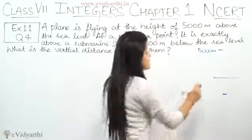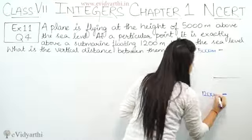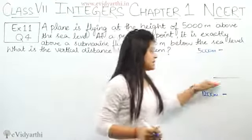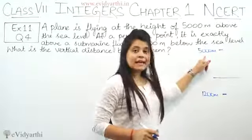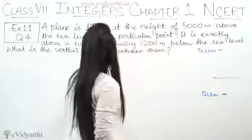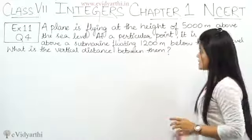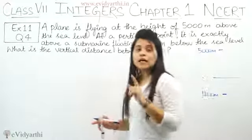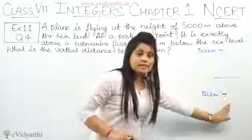And this distance from the sea level is 1200 meters. The submarine is 1200 meters below the sea level and the plane is 5000 meters above the sea level. Now you need to find what is the vertical distance between them. You need to find the vertical distance between the plane and the submarine.